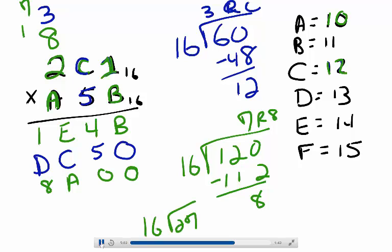16 divides into 27 one time with a remainder of 11, or B. So I write B and I carry the 1.